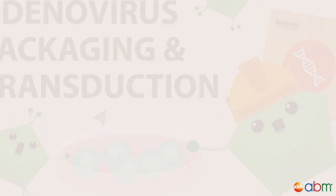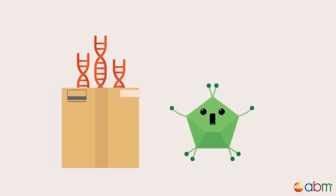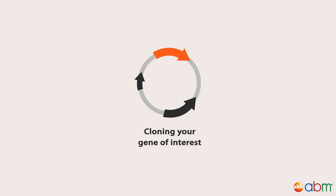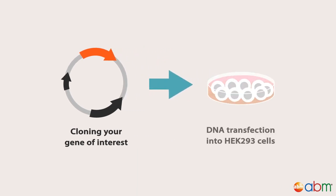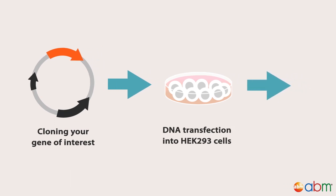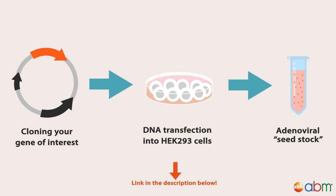In our previous video, we covered the basics of adenovirus packaging, starting from cloning your gene of interest into ABM's adenovirus expression system, followed by transfection of DNA into HEK293 cells, and leading to the collection of a low-titer adenoviral seedstock. You can find the link to that video in the description below.